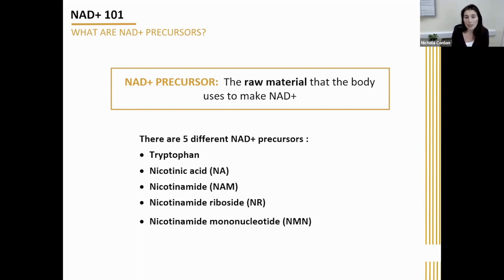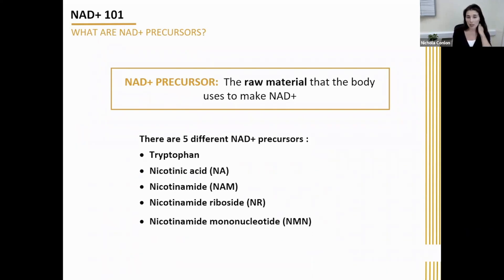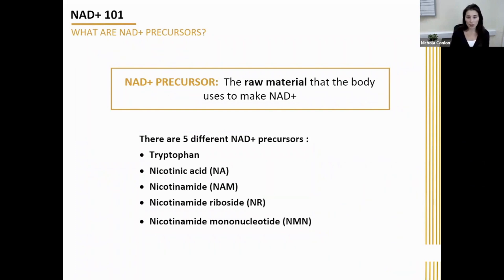There is the amino acid tryptophan, there's nicotinic acid, nicotinamide (commonly abbreviated as NAM, which you'll see in my presentation), nicotinamide riboside or NR, and nicotinamide mononucleotide or NMN. So the body can use all of these different precursors to make NAD.